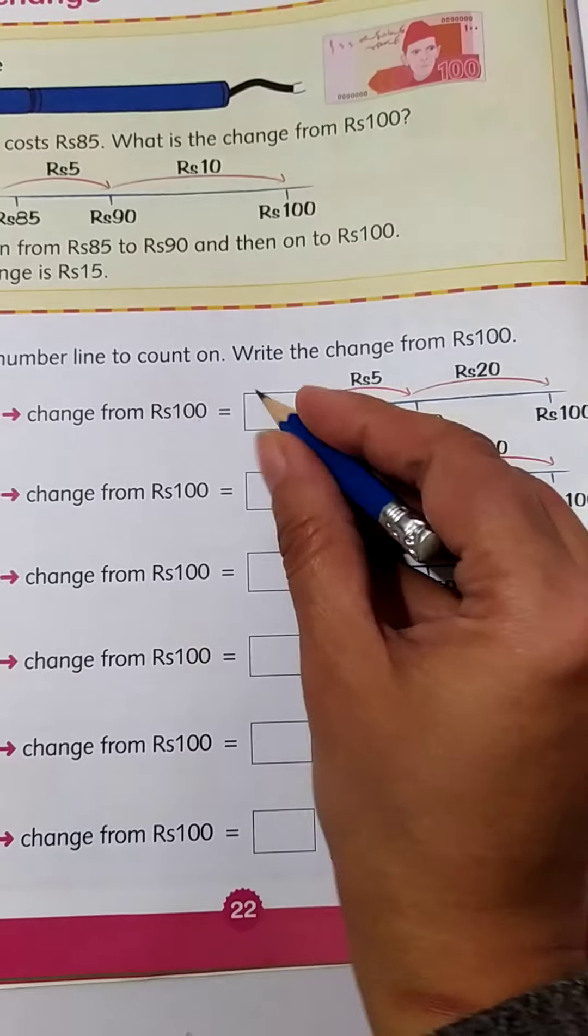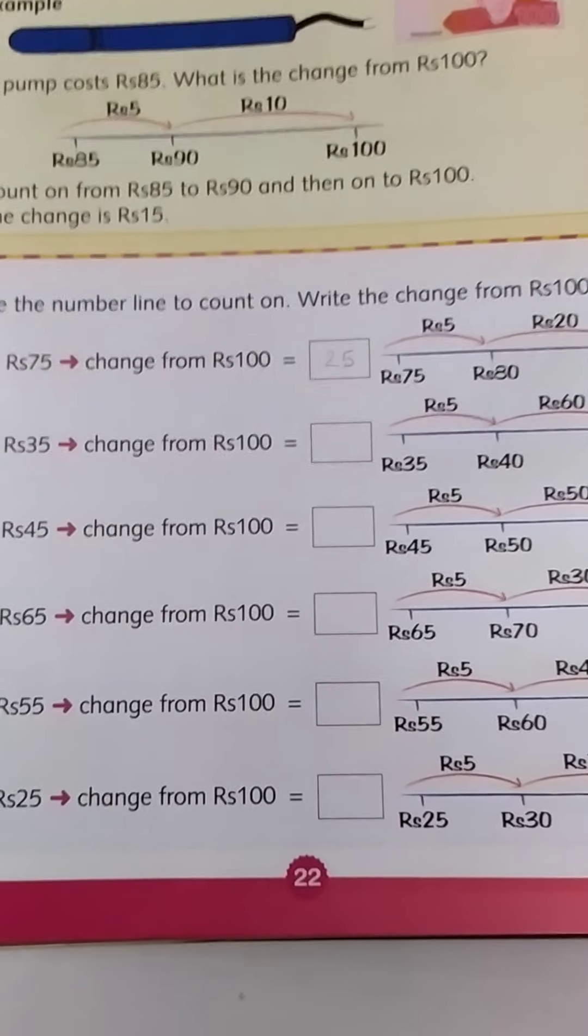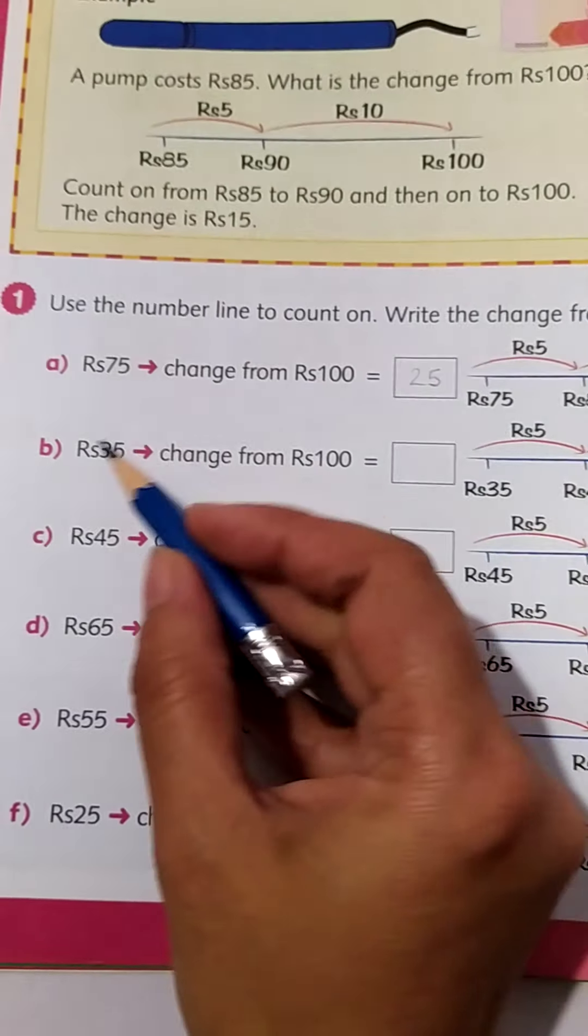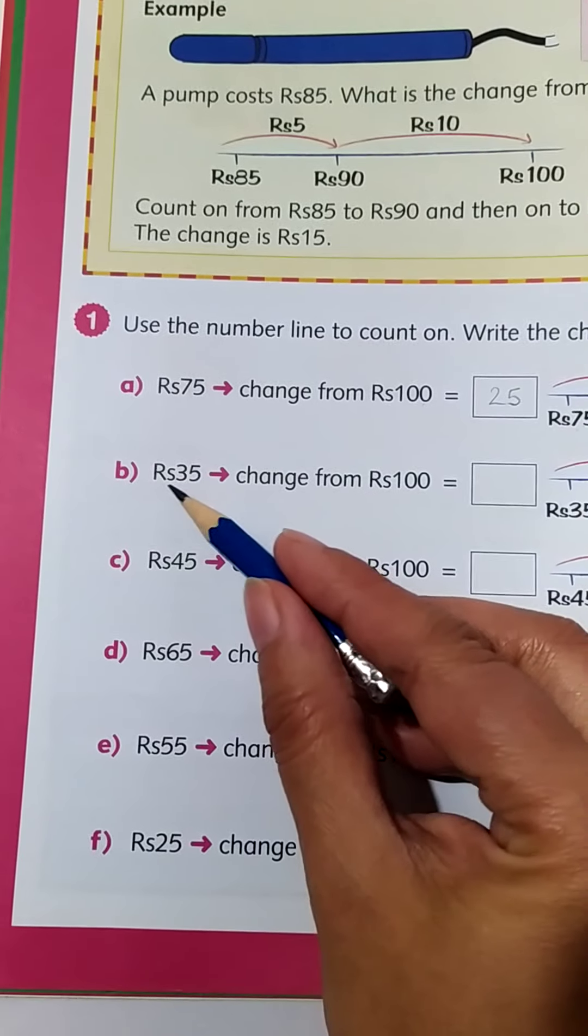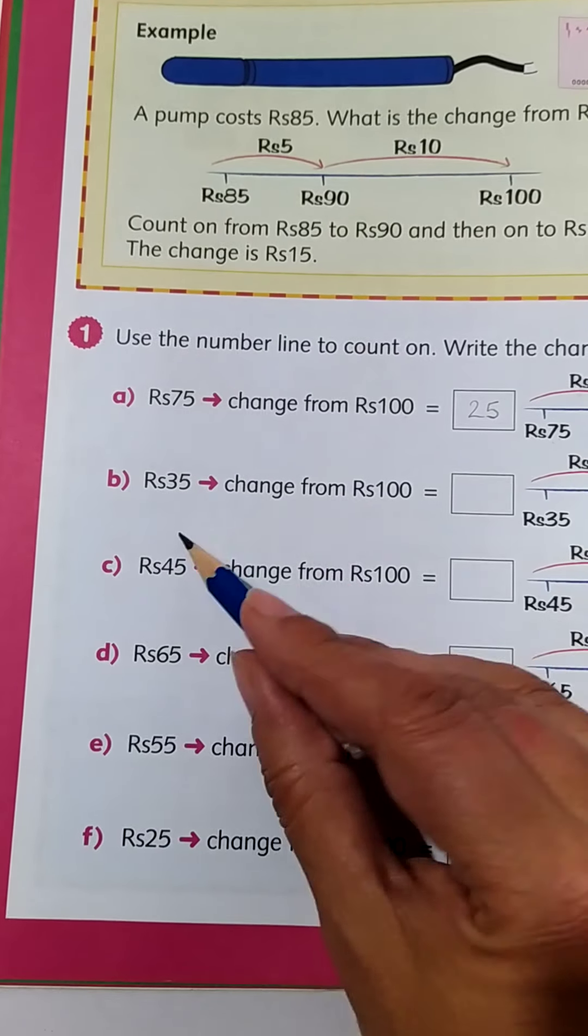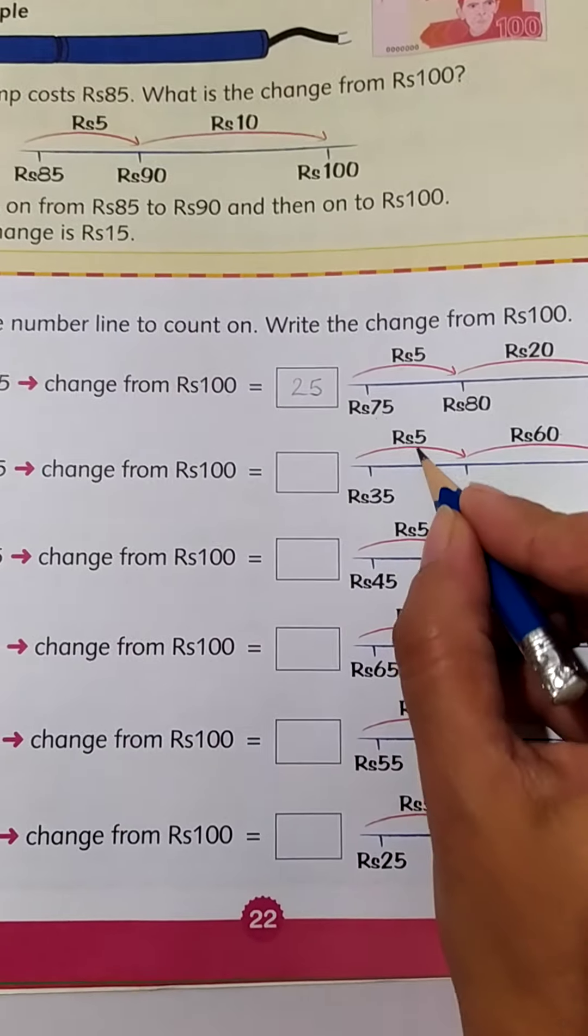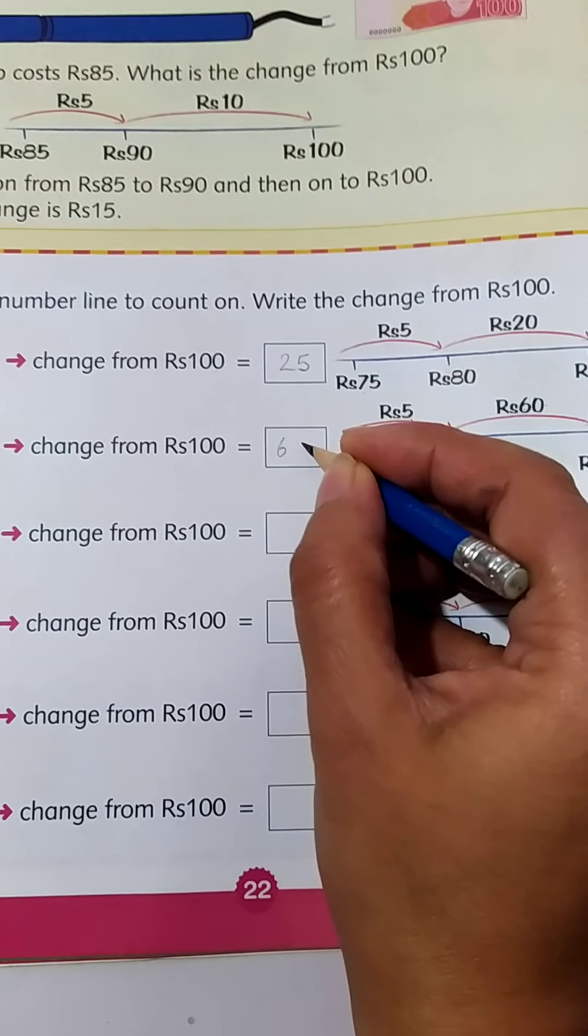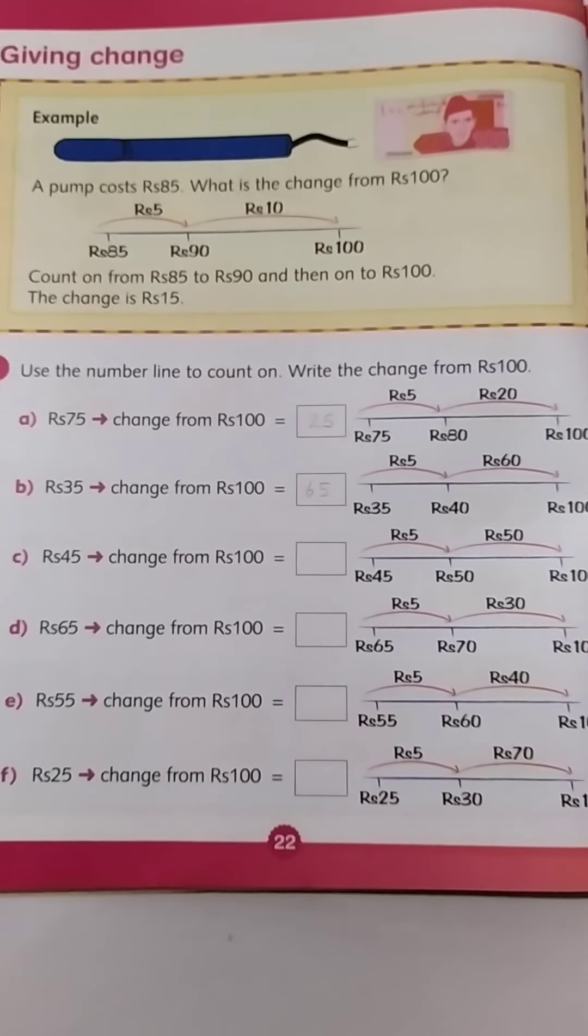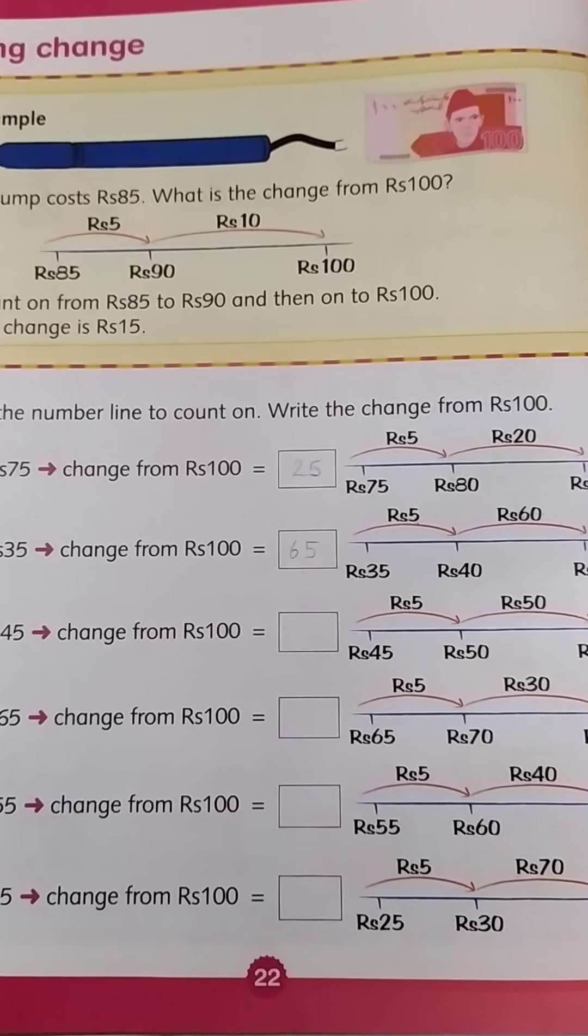Now check this out, 60 and 5, 35. Now your mama is asking you to buy something with 35 rupees and she has given you 100 rupees. And what will be the change? Yes, 65. You will write down 60 and 5 like this. It's so easy. I know you people can do it very easily. Okay, good luck.